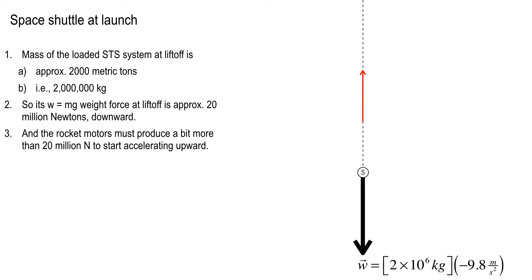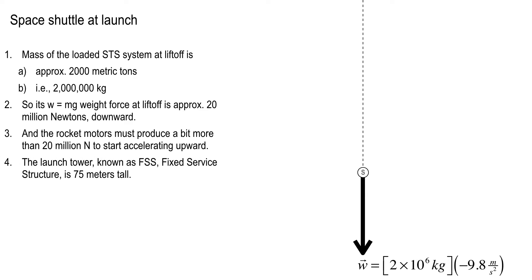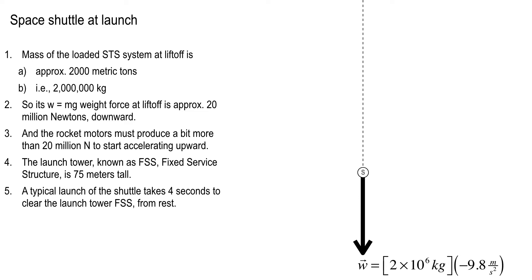The rocket engines have to produce a little bit more than that — or a lot more — if you want to start accelerating upwards. We can figure out F=MA, or we can estimate it, if we look at the basic time and space measurements of the launch process. If you look at the launch tower, which NASA calls the fixed service structure (FSS), it's about 70 to 75 meters tall.